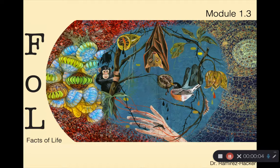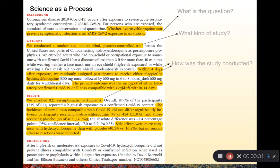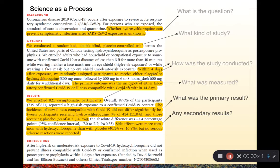Welcome back. Today we're going to be diving into module 1.3. Where we left off in module 1.2, we were really starting to take apart a randomized clinical control trial, trying to understand and interpret what was being measured and what the primary outcomes are. Going back to our abstract that we've been working through, we've been able to understand what the question is, what kind of study, how the study was conducted, what was measured, and now we're starting to dig into what the primary result is and any secondary results.